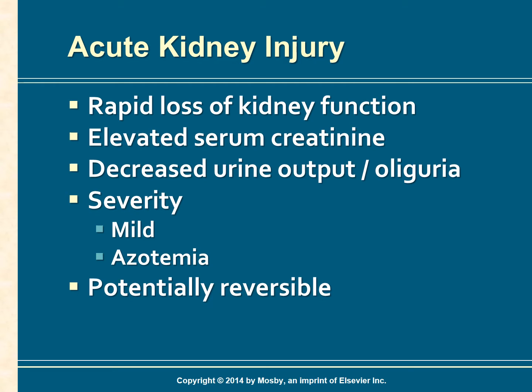This loss is accompanied by a rise in the serum creatinine level and a reduction in urine output. The severity of dysfunction can range from a small increase in serum creatinine or reduction in urine output to the development of azotemia, which is an accumulation of nitrogenous waste products like urea nitrogen and creatinine in the blood.